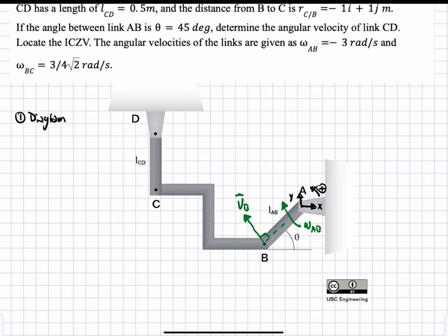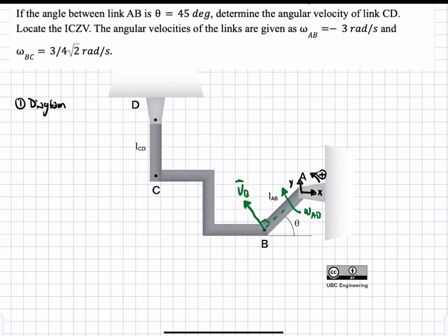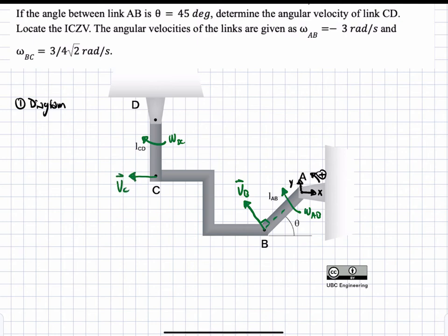All omegas will be in the positive or negative k-hat direction — in or out of the page. Therefore, the linear velocity at B will be in the x-y plane, partly along x and partly along y. We can also assume an angular velocity for link CD. We'll assume it clockwise, calling it omega DC, which causes a velocity in the negative x direction called VC. This direction is assumed since we don't know it; if the result is negative, we'll switch the sign from clockwise to counterclockwise.